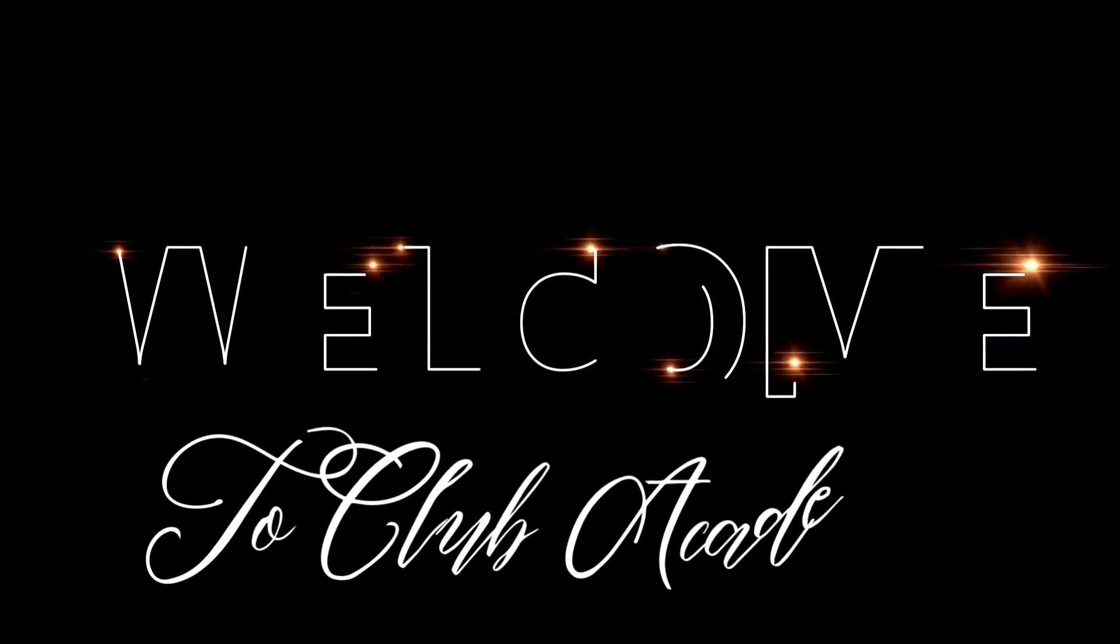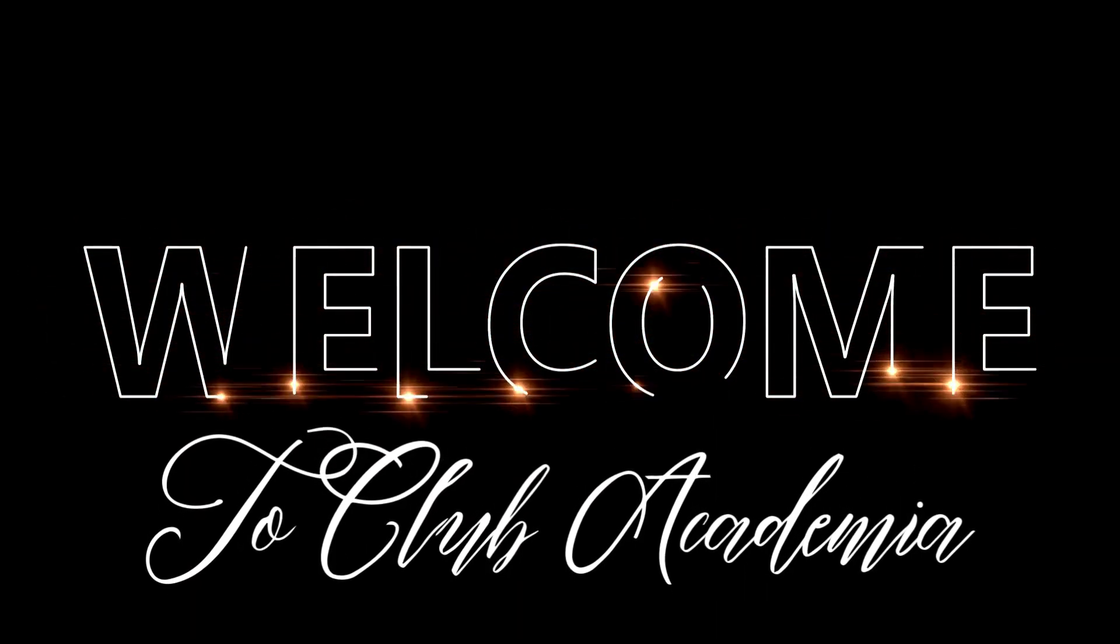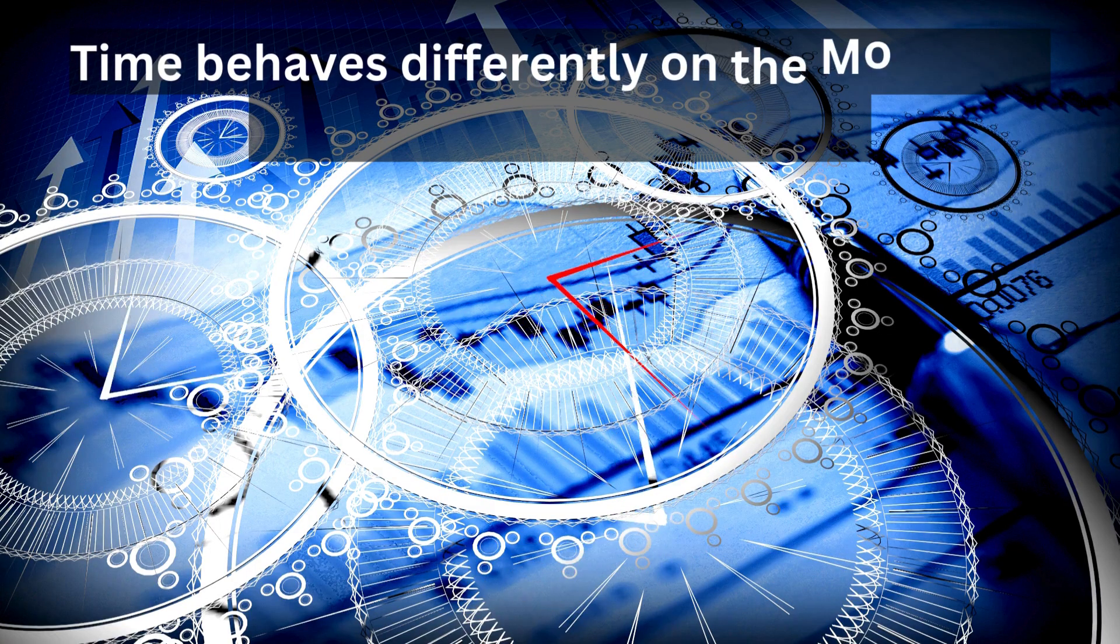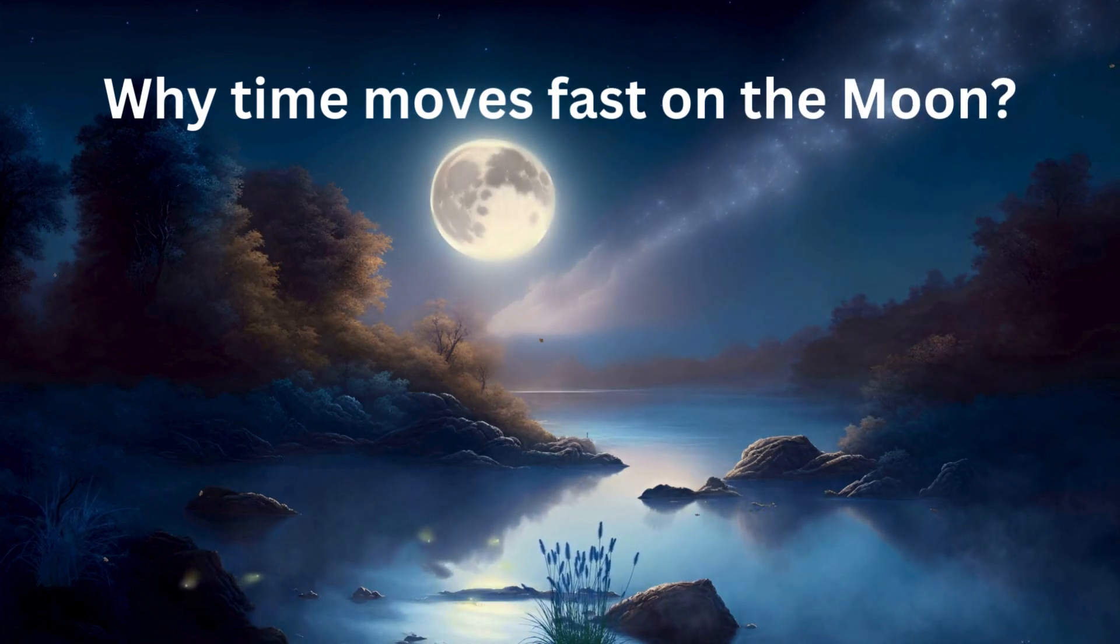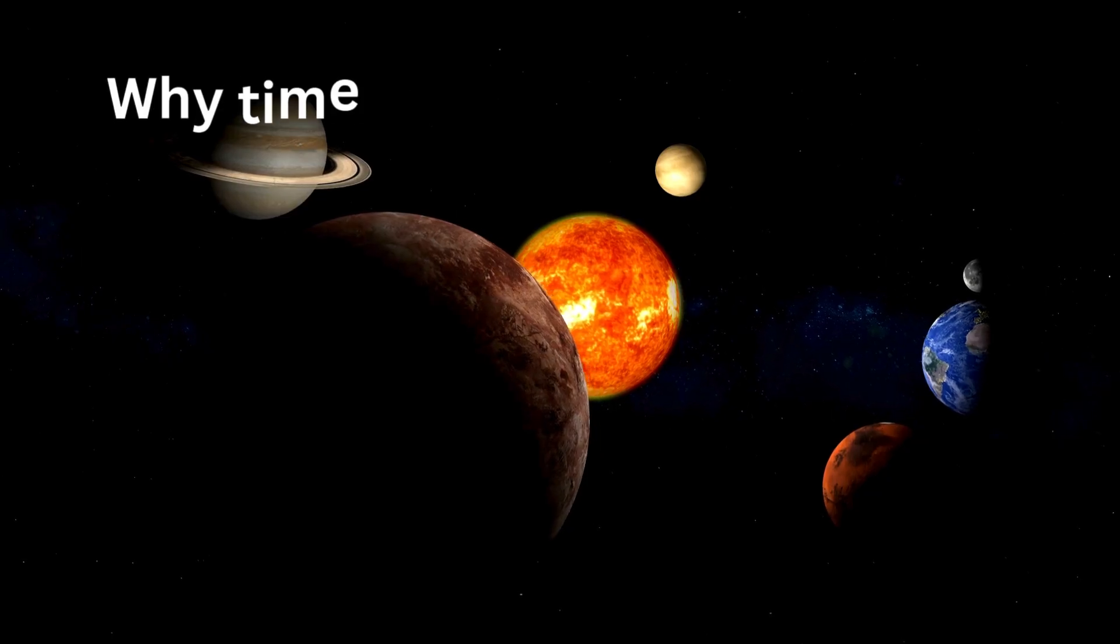Welcome to Club Academia. Today, we're diving into an astonishing topic: how time behaves differently on the moon and the sun compared to Earth. Why does time seem to move fast on the moon but slow down on the sun?